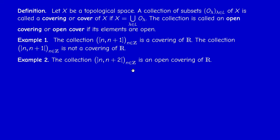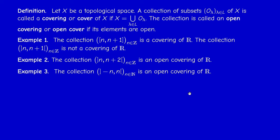If x is in R and you take n to be the floor function, you need to distinguish two cases, but it should be clear that the union of all these sets gives the whole line. The collection of all intervals of the form (-n, n) when n belongs to the non-negative integers is an open covering of R — when n is zero we get the empty set, so we can restrict n to positive integers. This gives an increasing collection that covers R.